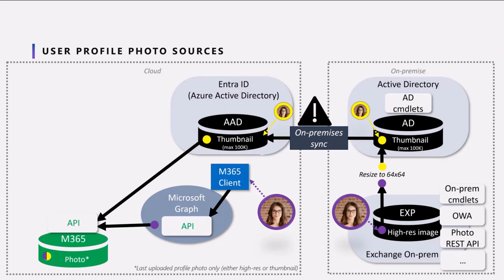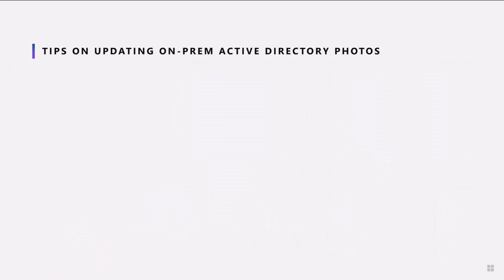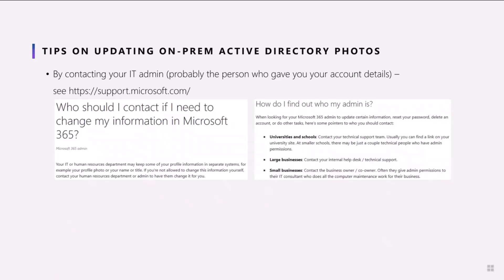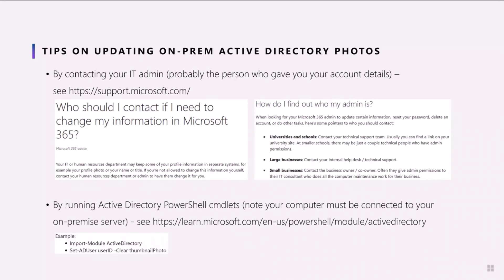This means there is a risk that on-premise photos can become outdated. Also, since on-premise photos are often updated by the IT admin, you might not even be aware that a photo is there. So let me take a moment to mention how these on-premise Active Directory photos can be changed or deleted. The easiest way is to contact your IT admin, who is probably the person that gave you your account details. If not, you can typically reach out to the technical support team in your company or the human resources department. Alternatively, you can run Active Directory commandlets yourself, but note that your computer must be connected to your on-premise server for this command to be executable. In practice, the easiest option is to get in touch with your IT admin.